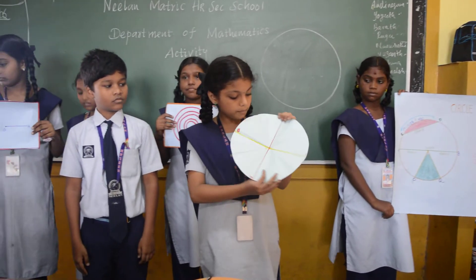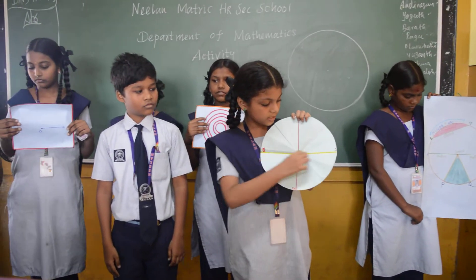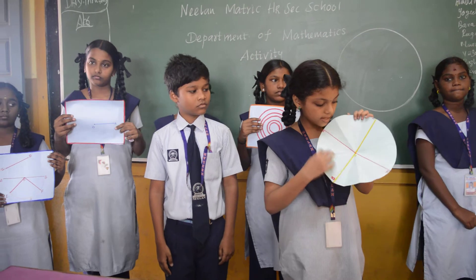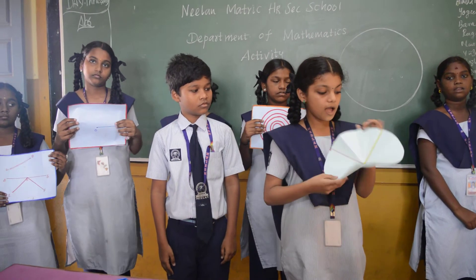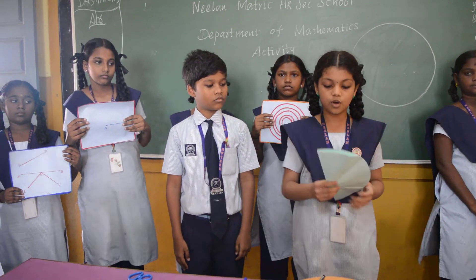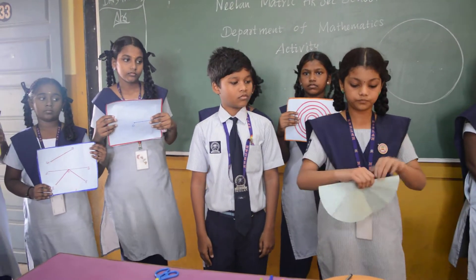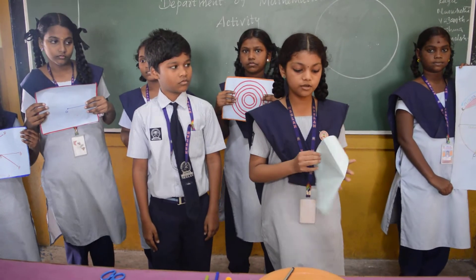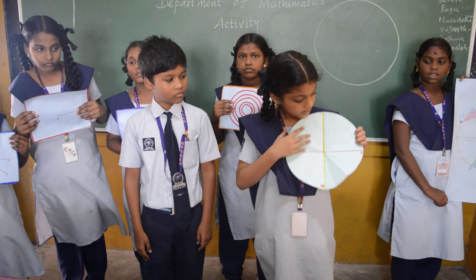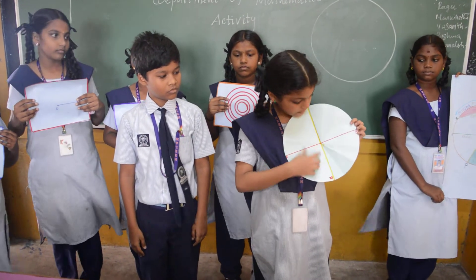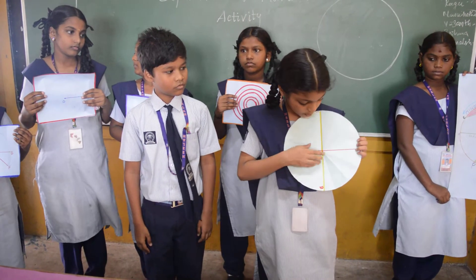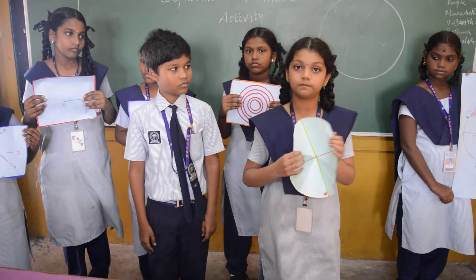Mark along the fold and you will get the diameter. Mark the diameter as A and E. And again fold the chart into half. You will find the new position. Mark the points as C and B. Now mark the center point as O.